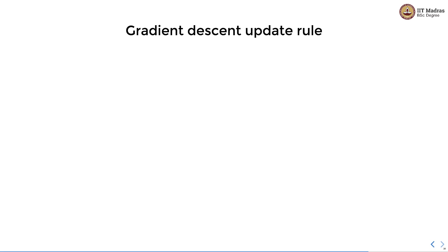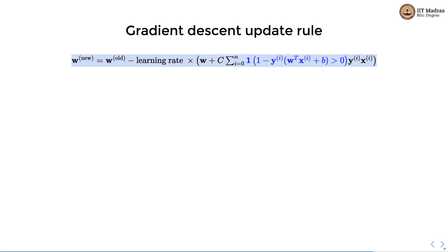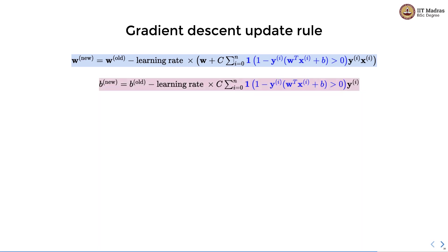Now that we know the partial derivatives, let's derive the gradient descent update rule. The new value of w is: w_old minus the learning rate times the partial derivative of the loss with respect to w, as derived in the previous slide. Similarly, the new value of b is: b_old minus the learning rate times the partial derivative of the loss function with respect to b.